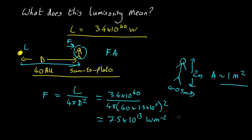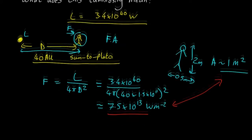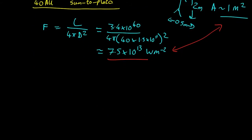And as the person's got about 1 square metre, that means the power absorbed by a person is about 7.5 by 10 to the 13 watts. Sounds like a lot. Is it a lot? Well, we can compare it to something.